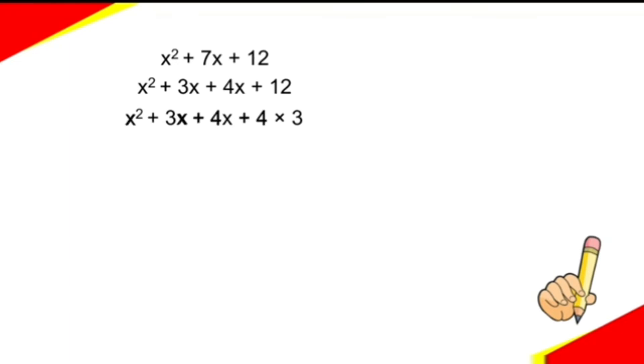Now, is there any common factor from the first two terms? Yes, x is common. So let us take x as a common. Then it remains x + 3. In the same way, is there any common factor from the last two terms? Yes, +4 is common. So let us take 4 as a common.